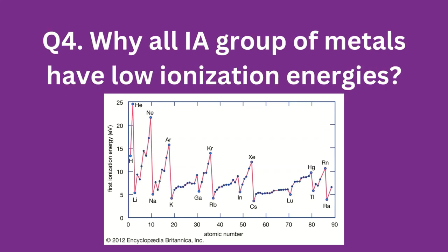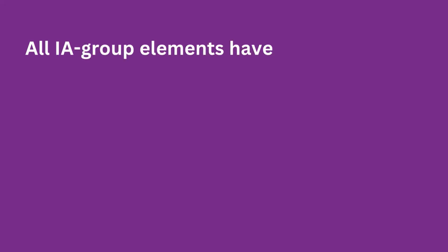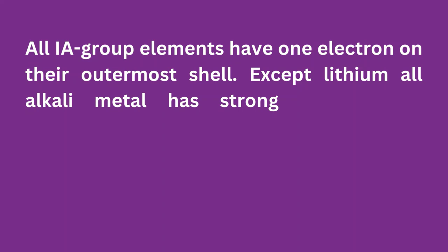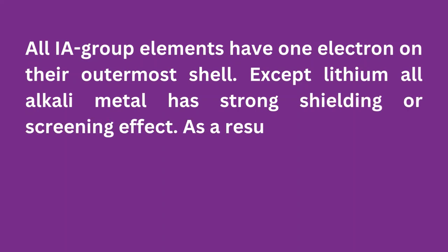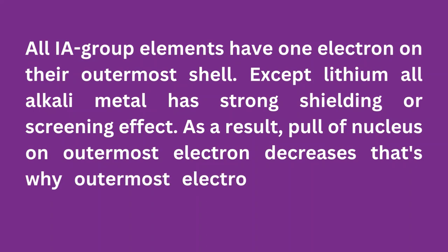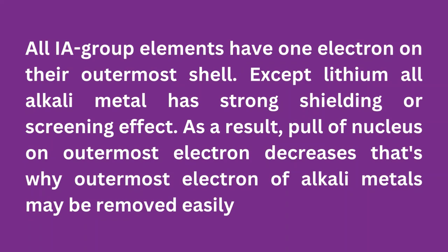Question 4: Why do all group 1A metals have low ionization energies? All group 1A elements have one electron in their outermost shell. Except lithium, all alkali metals have a strong shielding or screening effect. As a result, the pull of the nucleus on the outermost electron decreases, so the outermost electron of alkali metals may be removed easily using low energy.